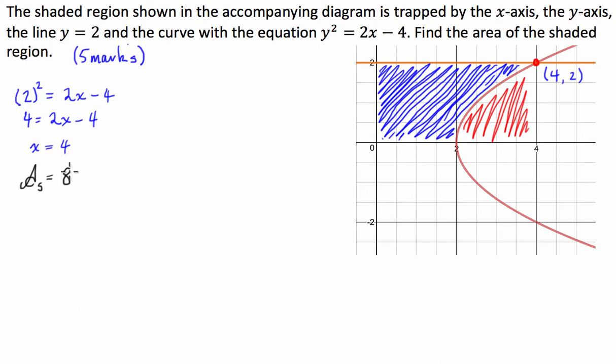subtract now the area of this red shaded region. And the way we can work that out is we can take the integral from 2 to 4. Now, this is going to be quite a difficult function to integrate, so what we're going to do here is we're going to make this y in terms of x rather than y squared in terms of x.